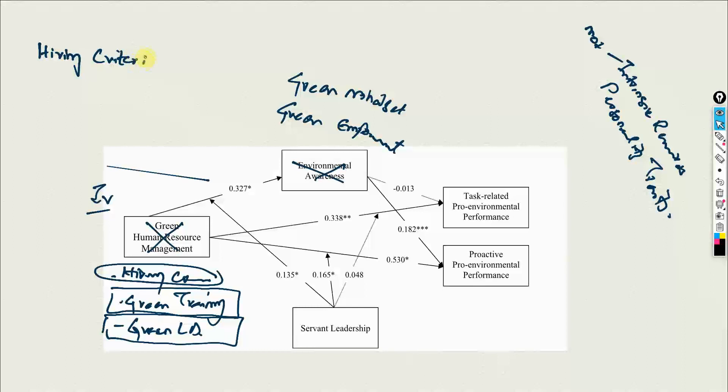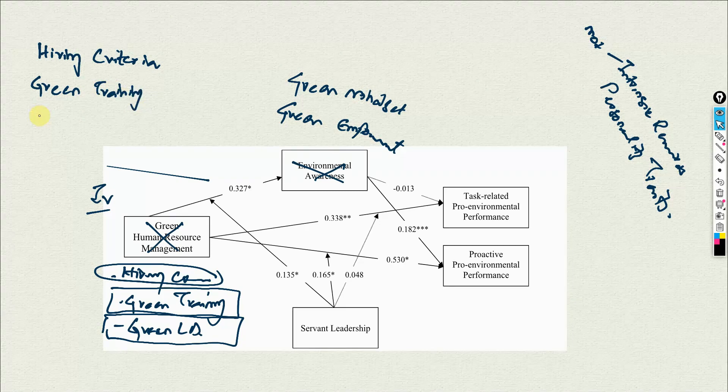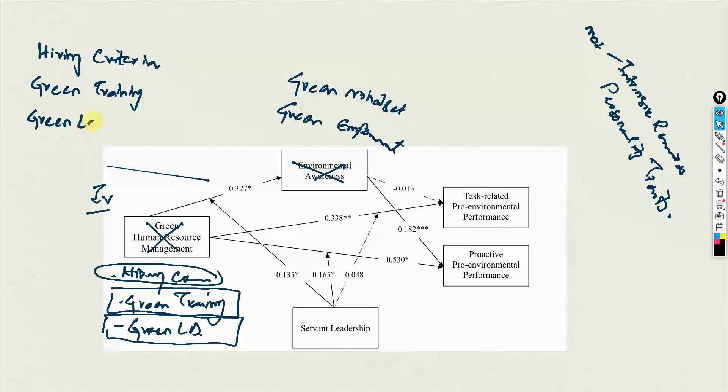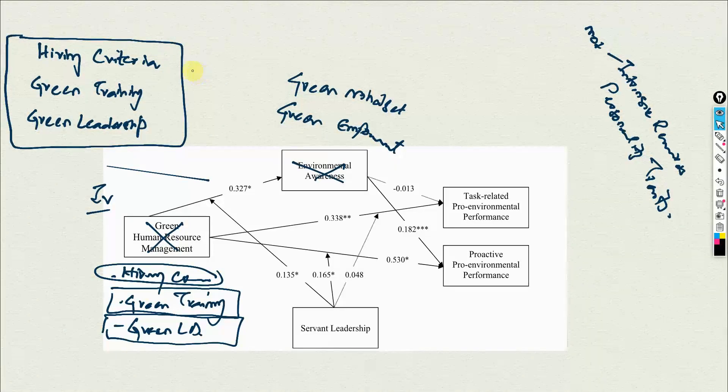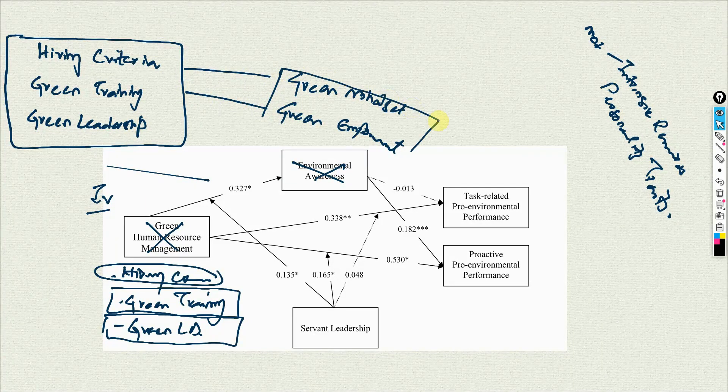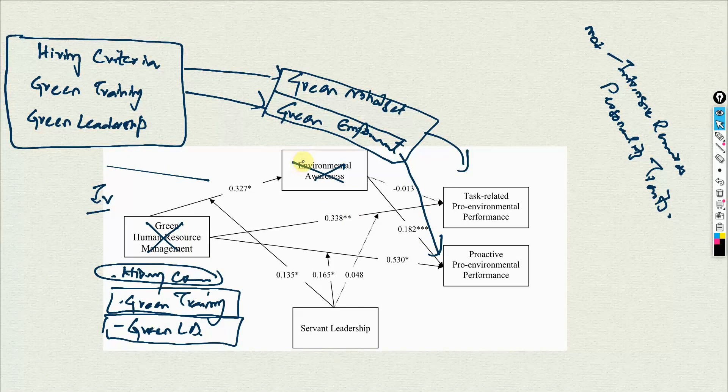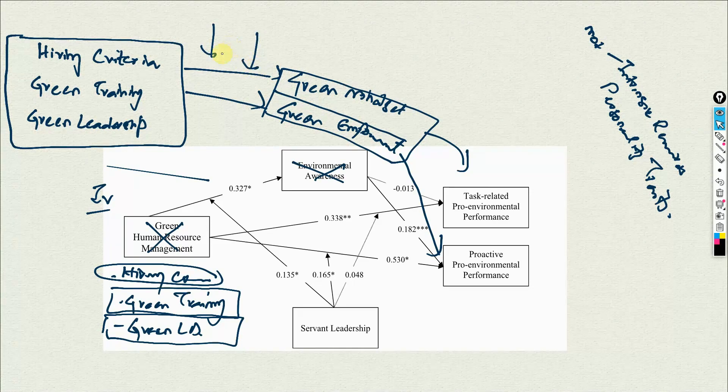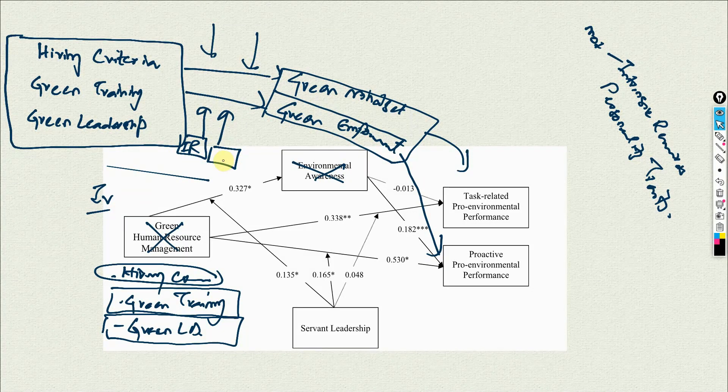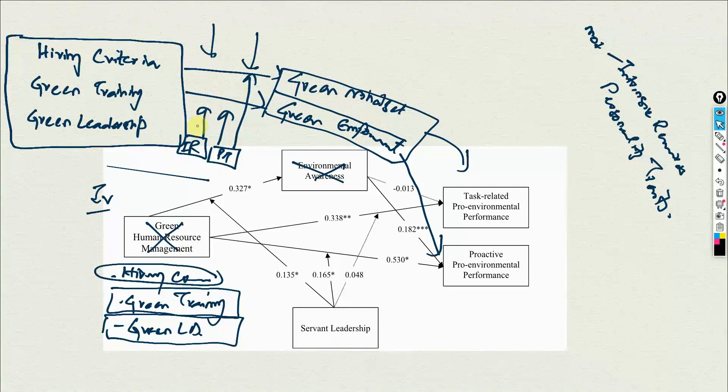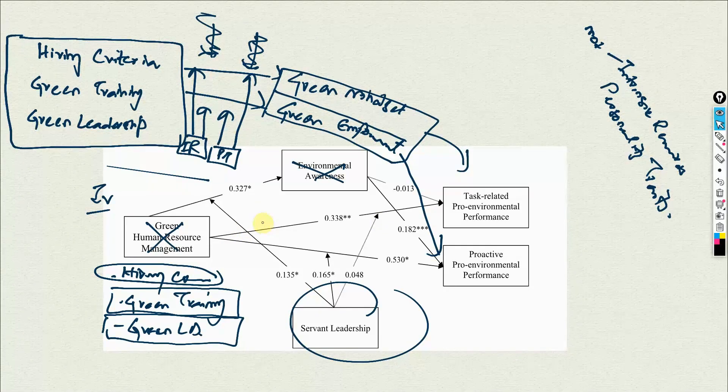So hiring criteria, green training, green leadership, and these HR practices will influence these two variables here. So these are my mediators and they will influence these two variables here. And we can have these two moderators here influencing these relationships, so we can have intrinsic rewards here, we can have personality traits here, and they can influence these as well. And you can remove this, just remove this.